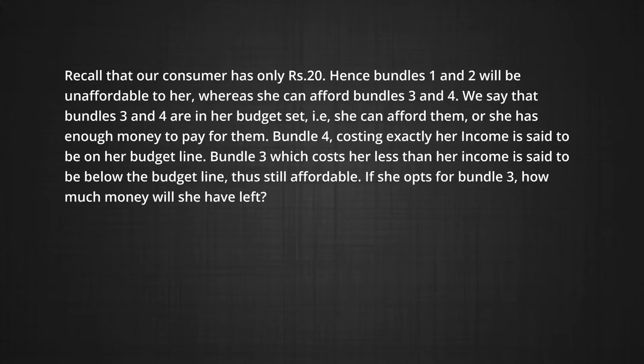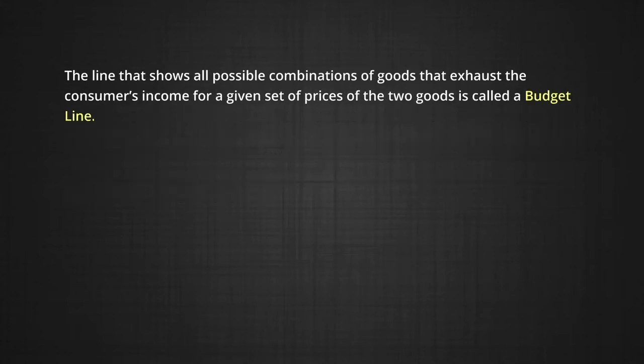If she opts for bundle 3, she has rupees 7 left over. The line that shows all possible combinations of goods that exhaust the consumer's income for a given set of prices of the two goods is called a budget line.